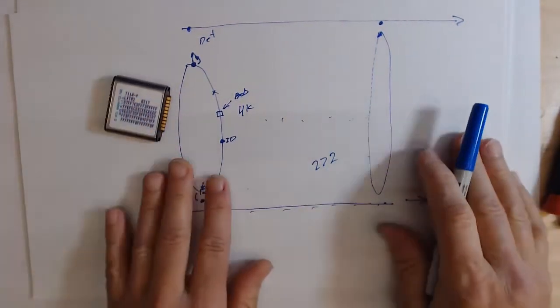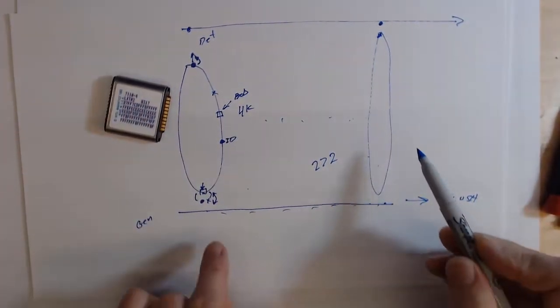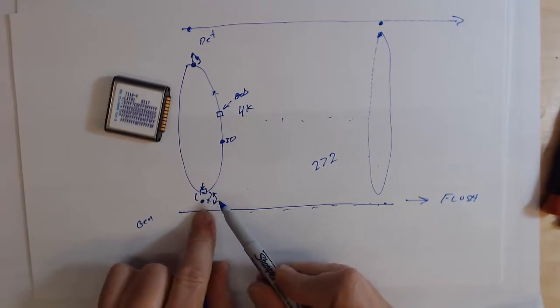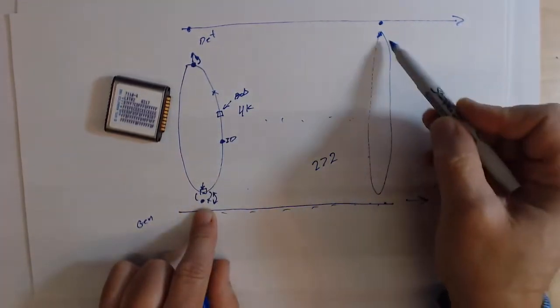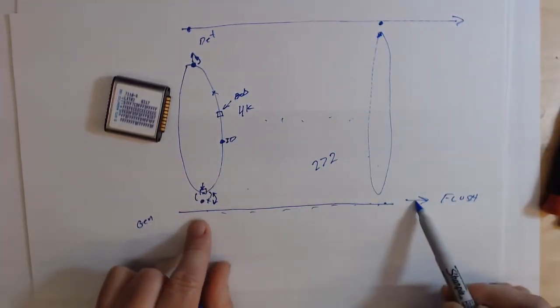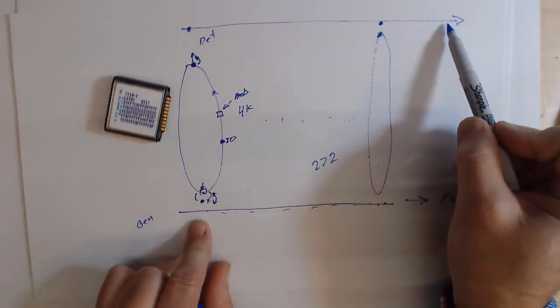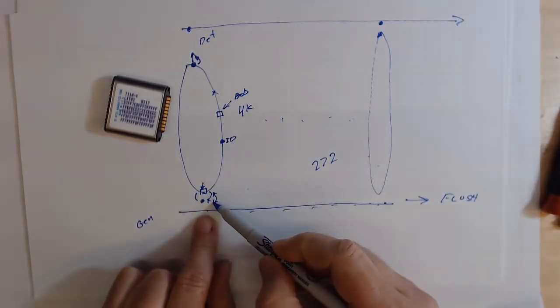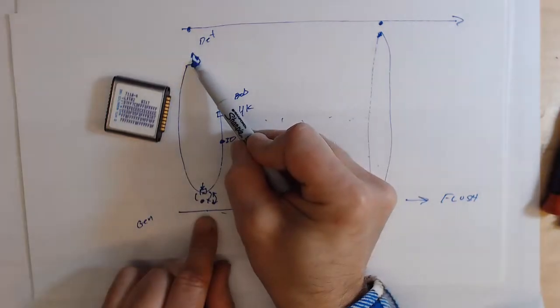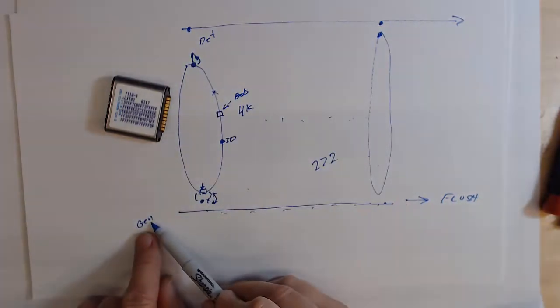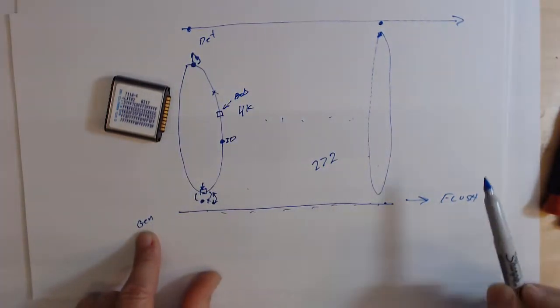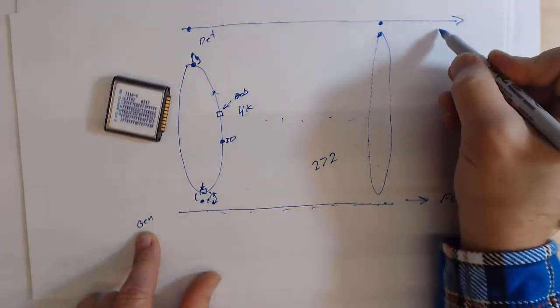So those are the basics of bubble memory and you can see there's some functions I have to have. I have to be able to walk all of these bubbles around these loops. I have to be able to walk them down these lines, the input line and the output line. I have to be able to swap bubbles, duplicate bubbles, generate bubbles, flush bubbles, and detect bubbles.